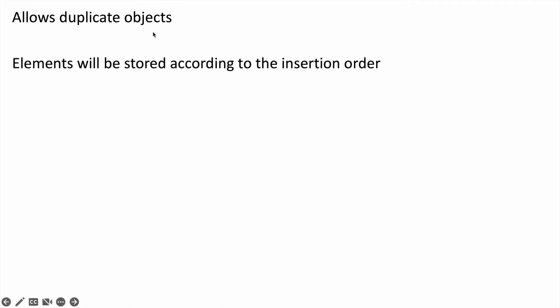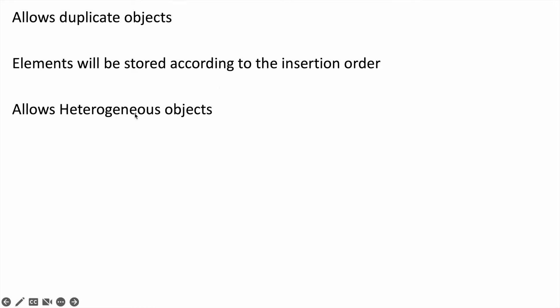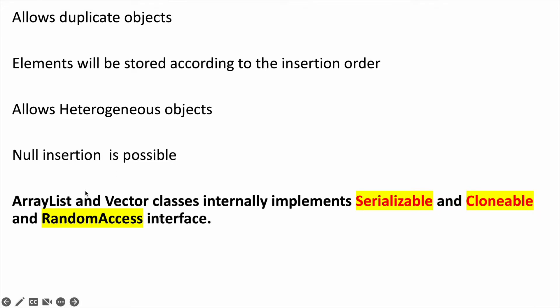These two classes, ArrayList and Vector, allow duplicate objects. Elements will be stored according to the insertion order, that is, they will follow the insertion order. ArrayList allows heterogeneous objects, that is, they will allow different types of data. Null insertion is possible. ArrayList and Vector classes internally implement Serializable, Cloneable, and RandomAccess interfaces.